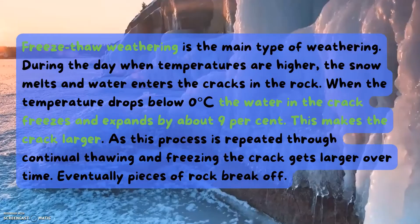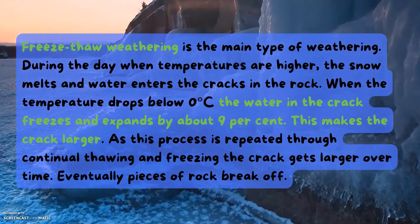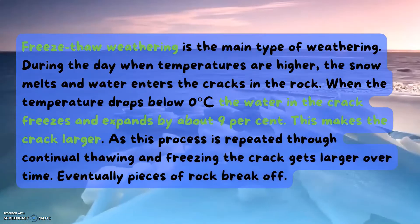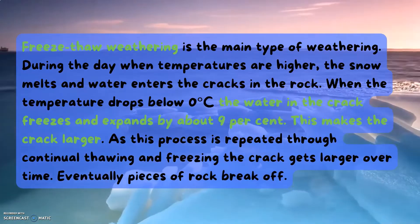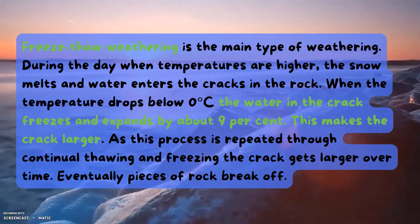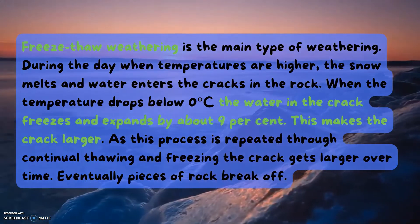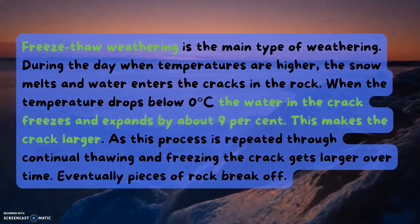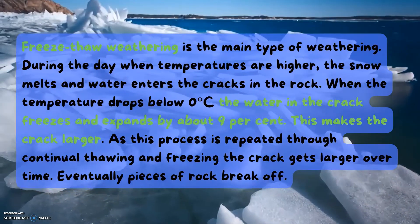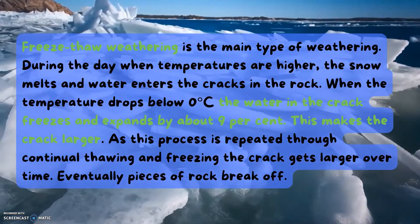Freeze-thaw weathering is the main type of weathering. During the day, when temperatures are higher, the snow melts and water enters cracks in the rock. When the temperature drops below zero degrees Celsius, the water in the crack freezes and expands by about 9%, making the cracks larger. As this process is repeated through continual thawing and freezing, the cracks get larger over time and eventually pieces of rock break off. If you study coasts, the same thing happens.